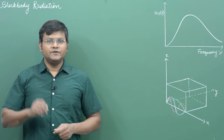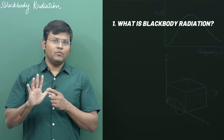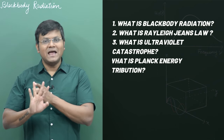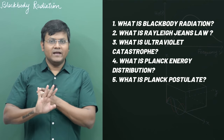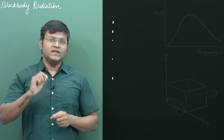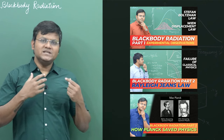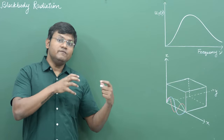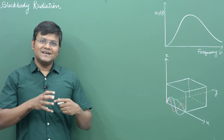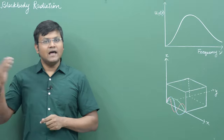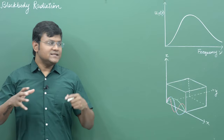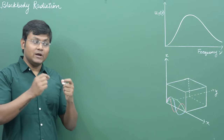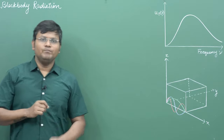In this video I want to answer five questions: first, what is black body radiation; second, what is the Rayleigh-Jeans law; third, what is ultraviolet catastrophe; fourth, what is Planck's energy distribution; and fifth, what is the Planck postulate. I have made videos on all these topics in elaborate fashion in the last three lectures, so I am creating this summary video to collect all the ideas in one concise video so we can look at the progression of these ideas.